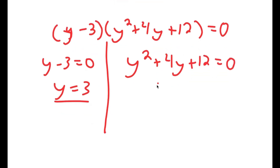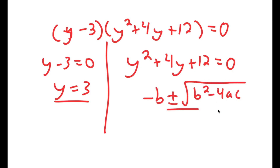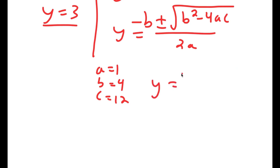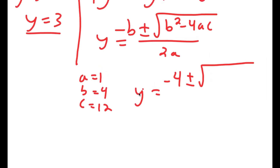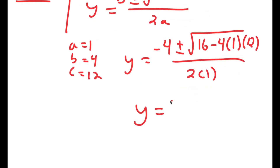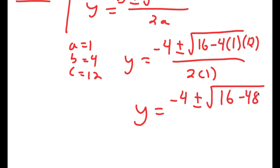To solve y squared plus 4y plus 12 equals 0, we have to use the quadratic formula: negative b plus or minus the square root of b squared minus 4ac all over 2a. In this case, a is 1, b is 4, and c is 12. So I get y equals negative 4 plus or minus the square root of 4 squared minus 4 times 1 times 12, all over 2 times 1. This is equal to negative 4 plus or minus the square root of 16 minus 48 over 2.